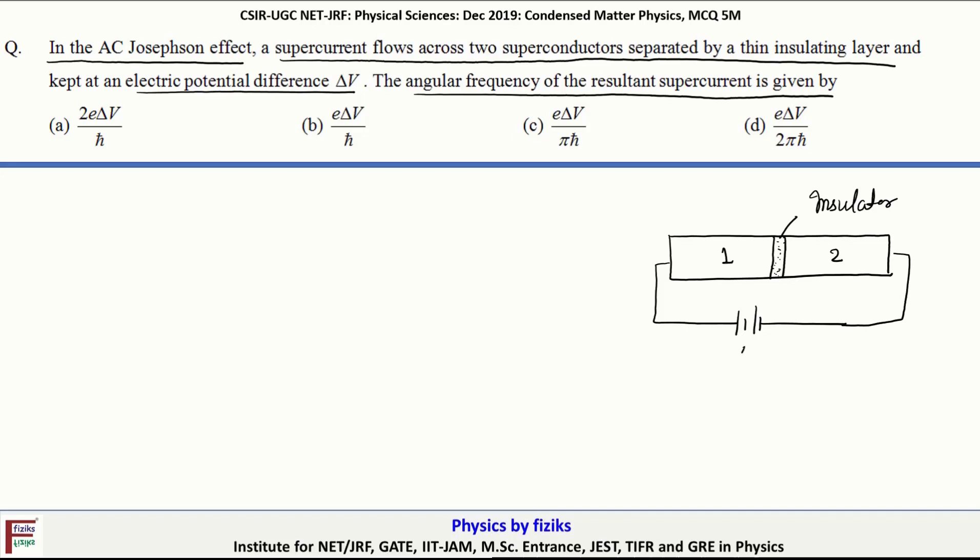As in the problem, the potential difference is given, that is delta V. Then a supercurrent is going to flow across the junction. This RF current which is flowing along the junction, its expression will be equal to...